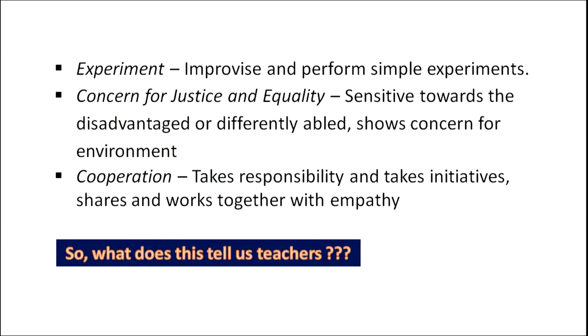A very important skill is the concern for justice and equality. It is not enough that we look at cognition; we also need to look carefully at the affective dimension, because that dimension helps us to live in a social and emotional world. It teaches us to interact with and live with people of different temperaments and environments. The last skill is cooperation — the ability of the child to take initiative, share work with others, and also display empathy.